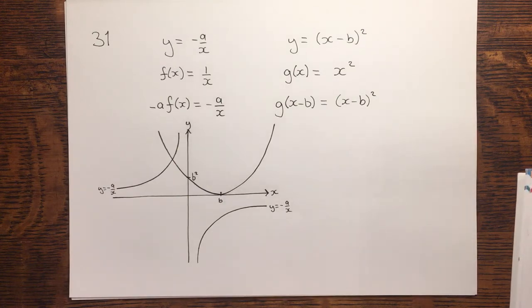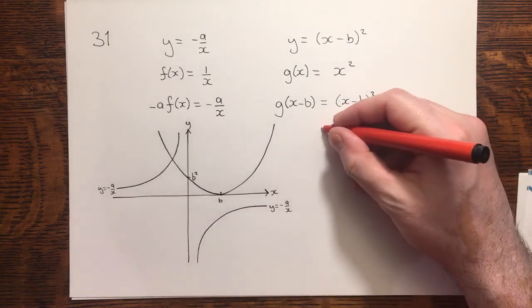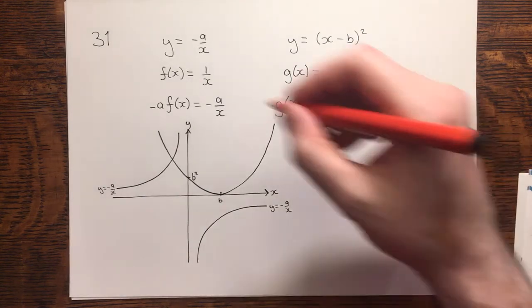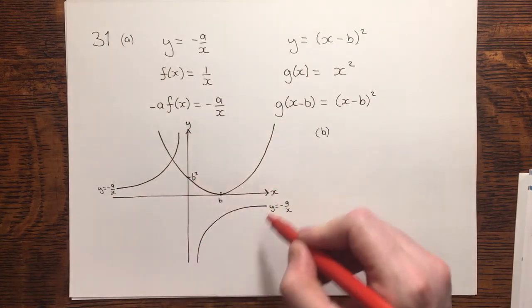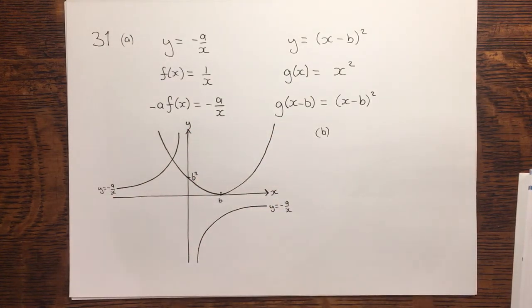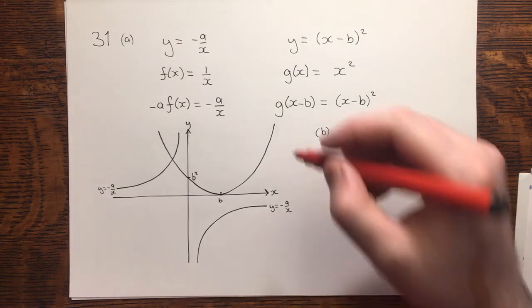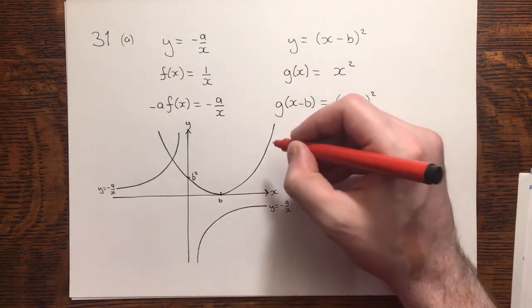Before we move to part b, a quick note on our first equation. It had no axis intercepts before it was translated, and also none after it was translated, because it was a reflection. Therefore, there's none to label. I also just want to label this curve as well.